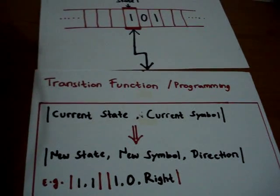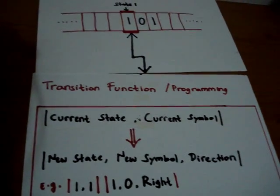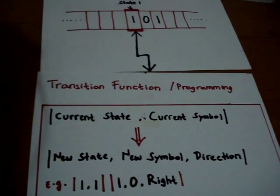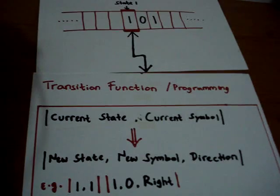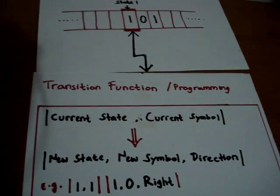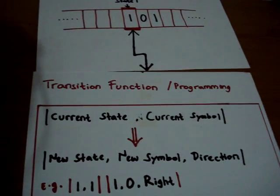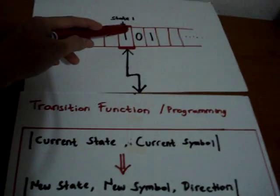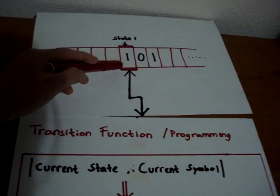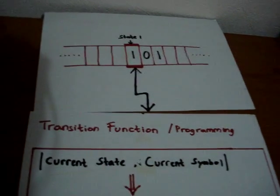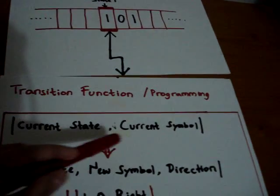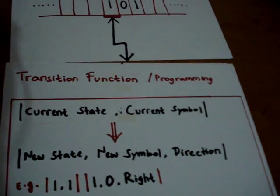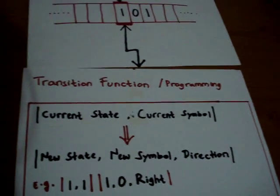This formalization is basically a theoretical formalization of your personal computer. Imagine on your computer, this is like your memory, and a little reader that reads the memory like a CPU. The instructions are available within the processor for processing the data. Basically, that's what a Turing machine is.